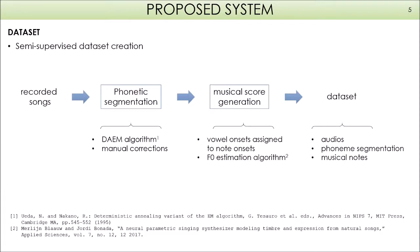For training the model, we use datasets created in a semi-supervised way. We start with a set of recorded songs and perform phonetic segmentation using the DAEM algorithm, applying some manual corrections. Then we compute the musical score by assigning vowel onsets to note onsets using an F0 estimation algorithm. This way, the dataset finally consists of audios with phonetic segmentation and musical notes.